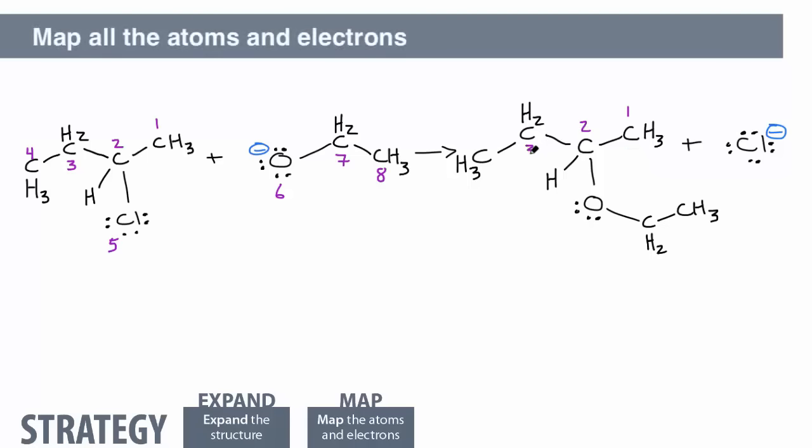We can number the rest of the carbon, oxygen, and chlorine atoms, making sure to give the atoms the same numbers in the products as in the starting materials.